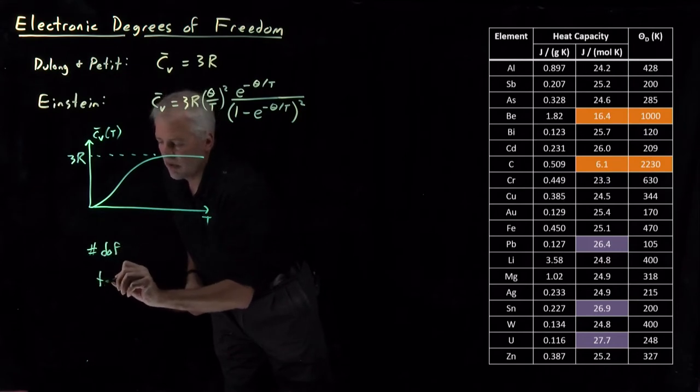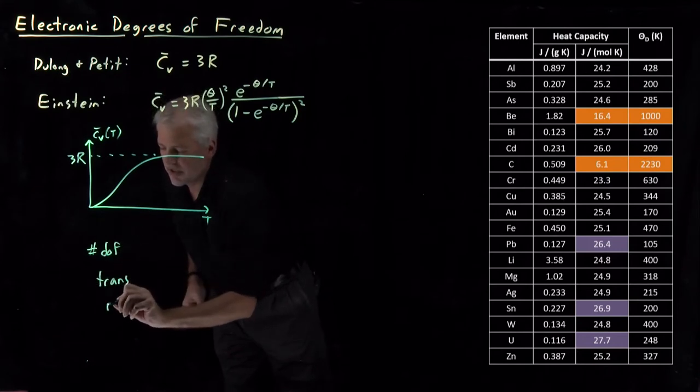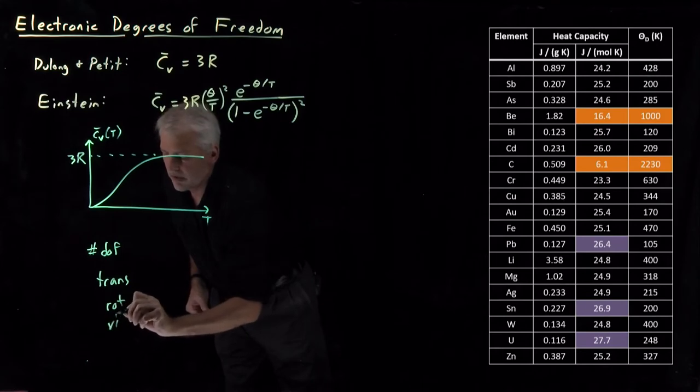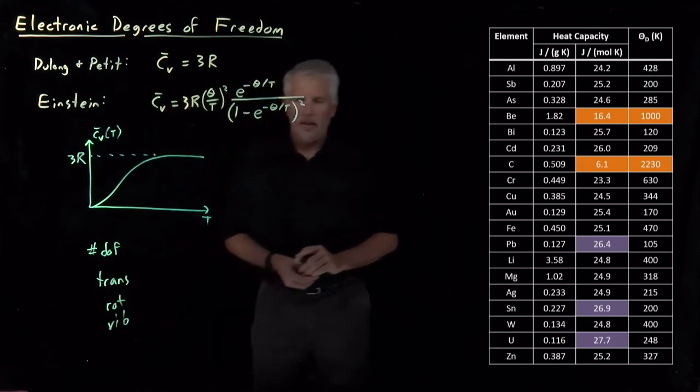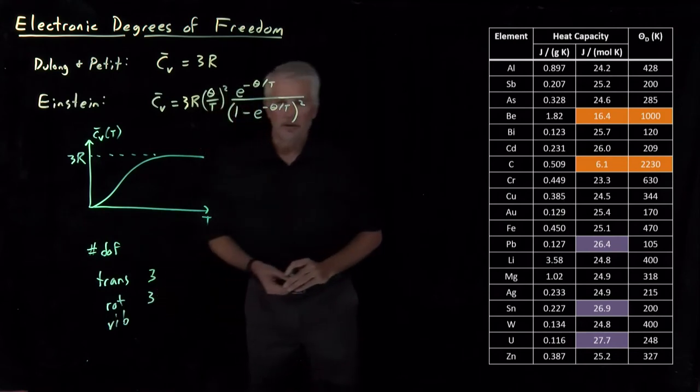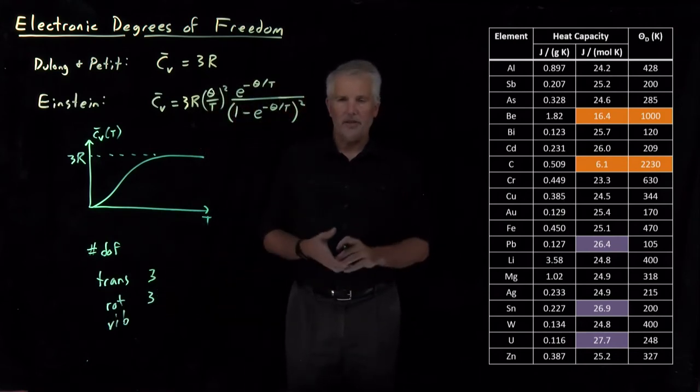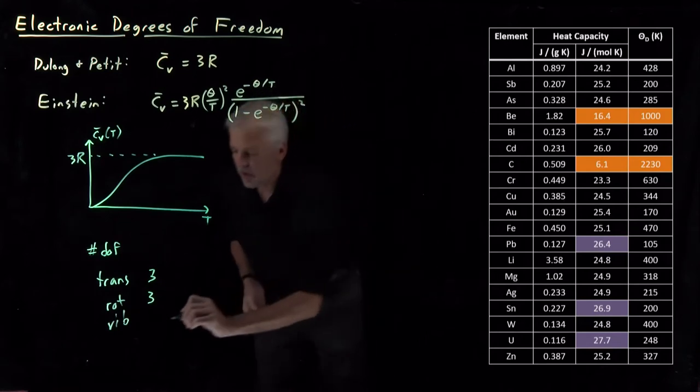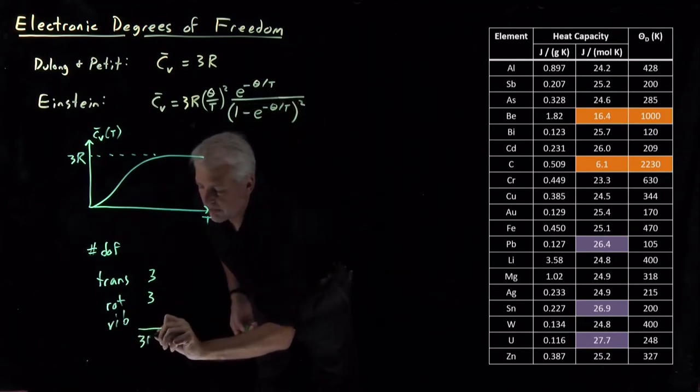Translational, rotational, vibrational degrees of freedom. There's only a few translational and rotational degrees of freedom. In our solid that contains a large number of atoms, most of those 3N degrees of freedom are vibrational degrees of freedom.